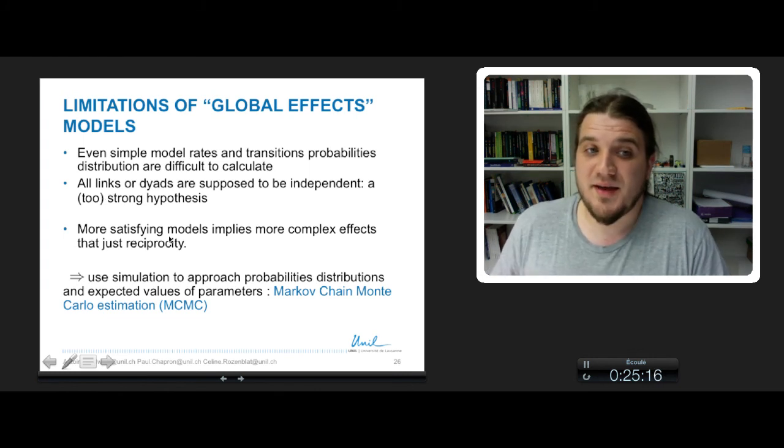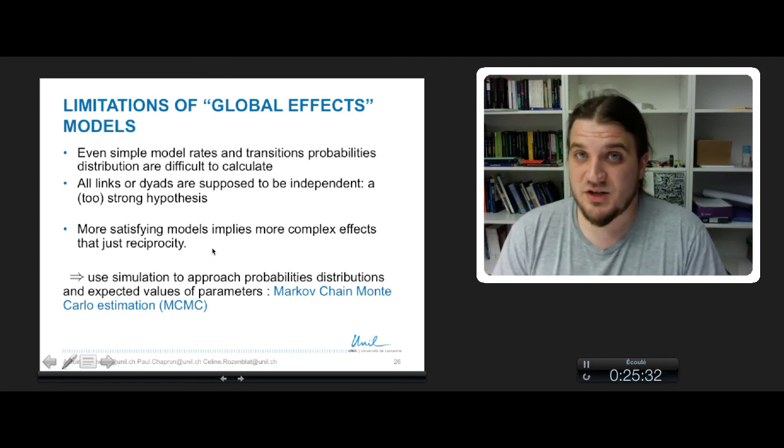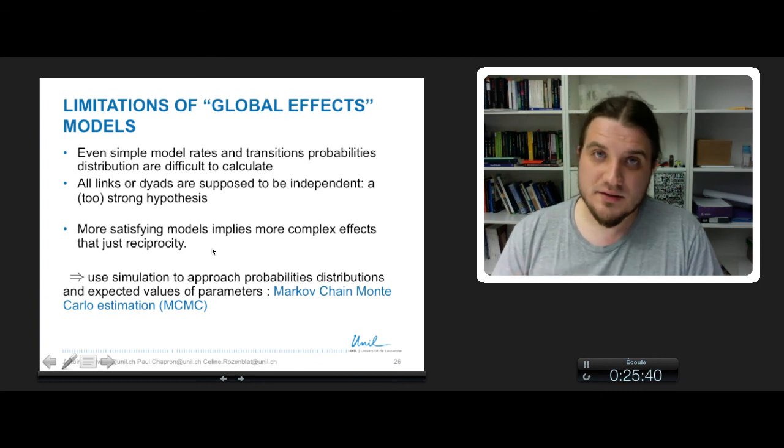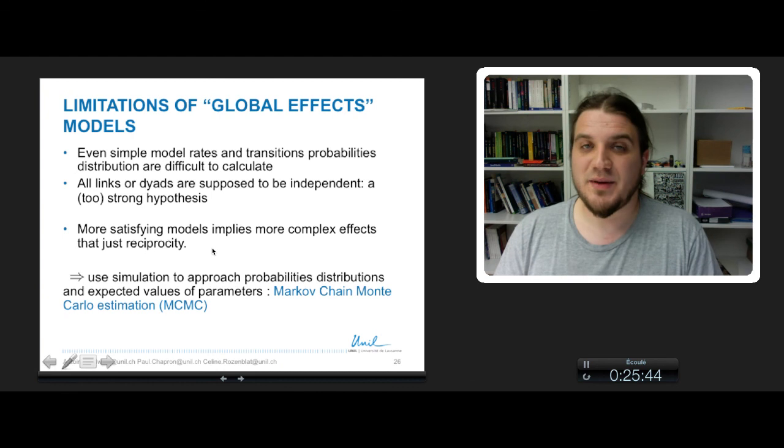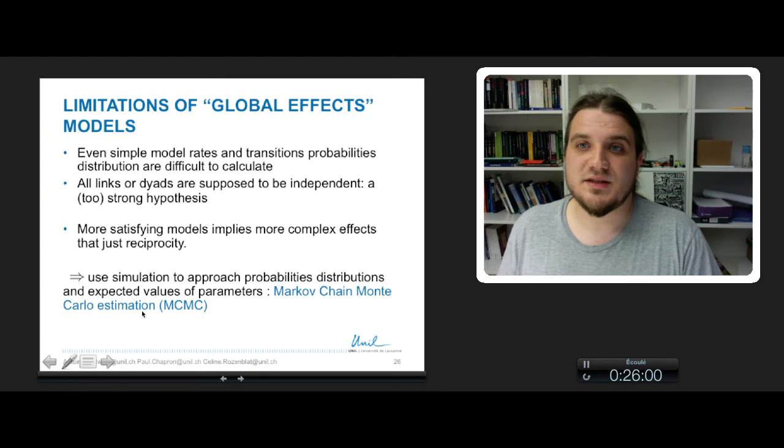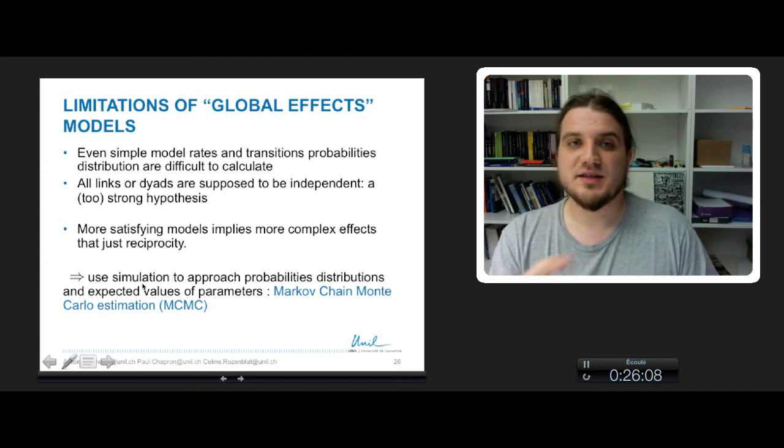More satisfying models imply more complex effects than just reciprocity. It will be impossible to calculate by hand. So when it's impossible to calculate by hand, we make some simulations and we try to make some approximation of the real distribution by making a lot of simulation until we get close to the expected transition rate matrix capital Q. We will use simulation to approach probabilities distribution and we will use for that a class of techniques called MCMC for Markov chain Monte Carlo estimation.